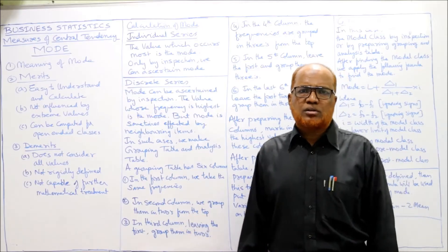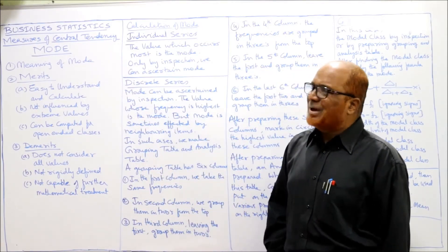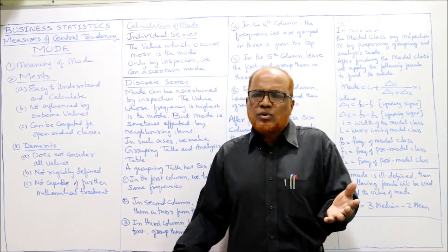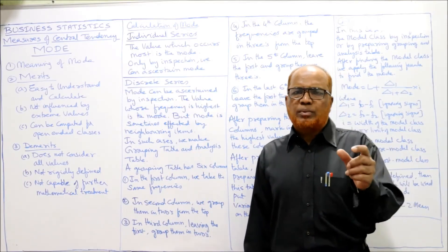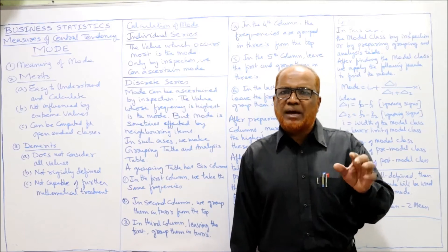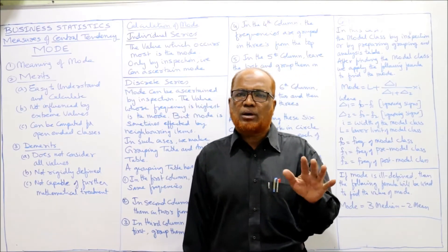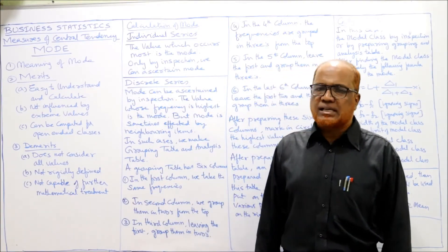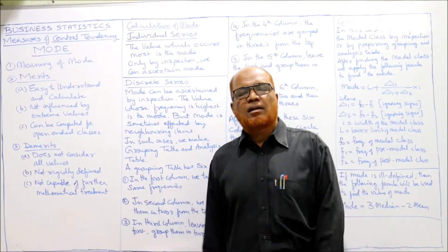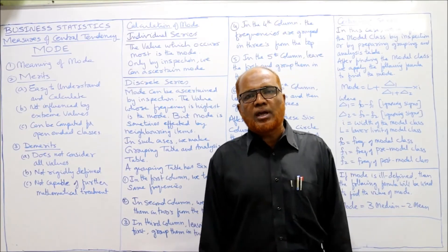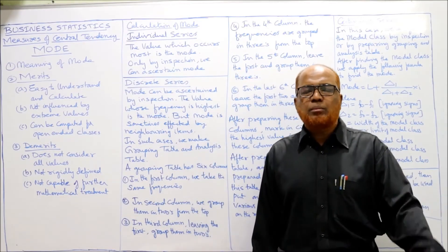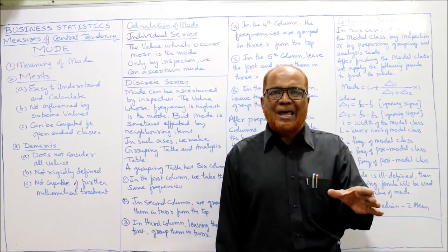Mode is very easy to calculate and find out. The merits of mode: it's easy to understand and simple to calculate — mode is simply the value that repeats more number of times. It is not influenced by extreme values, whether lowest or highest. It can be computed for open-ended classes, for example below 100 or above 2000. Mode can also be found even by inspection without applying any formula, and it can be ascertained by graphic method as well.